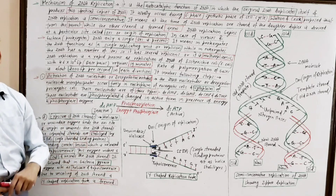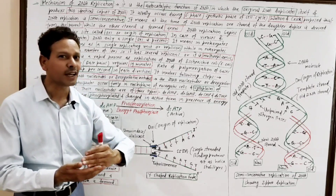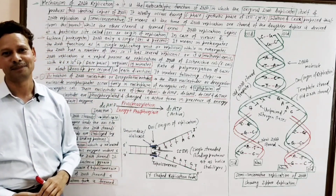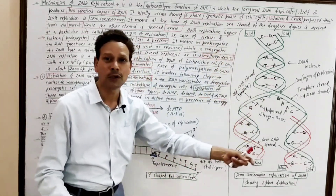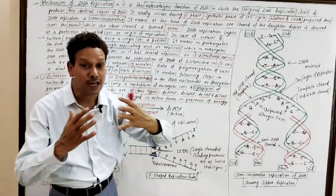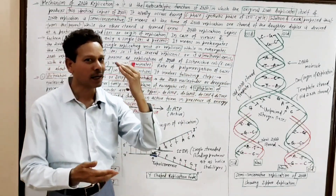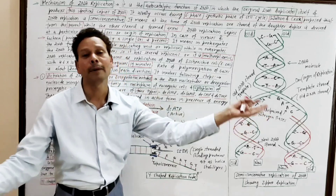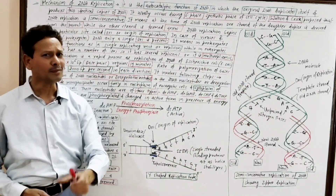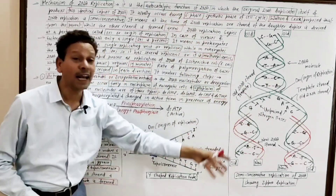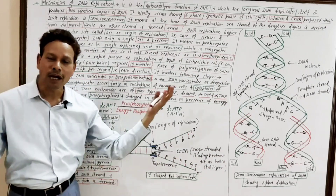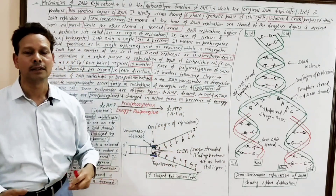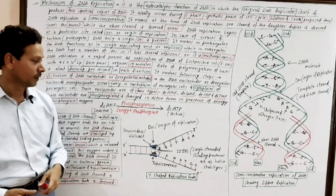The second step is exposure of DNA strands. The DNA molecule is a double-stranded helix, but at the time of DNA replication both DNA strands are separated — the DNA helix becomes uncoiled and unwound.